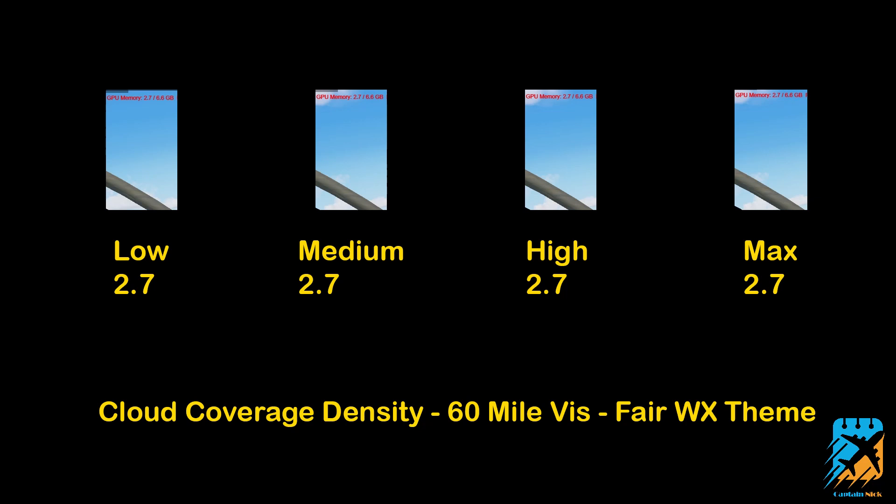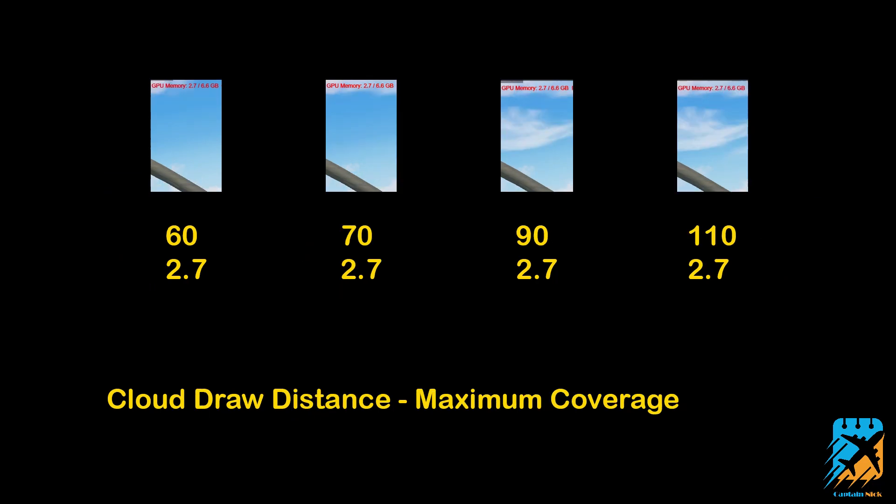And now the moment everyone has been waiting on, clouds. Starting with the legacy clouds, I have the visibility at the lowest, which is 60 miles. Once again, we're doing the fair weather theme and we're going from low, medium, high, and then max as far as the cloud coverage density. Obviously we had the volumetric fog and all that jazz ticked off there. Low, medium, high, max, all exactly the same on these legacy clouds. I honestly don't recall if it was the same in 4.5. I personally expected this to maybe be a little bit different between the low, medium, high, and max. Maybe different when it comes to different weather settings though, but I chose a weather setting that would be easy for us to do this and the beta atmospherics.